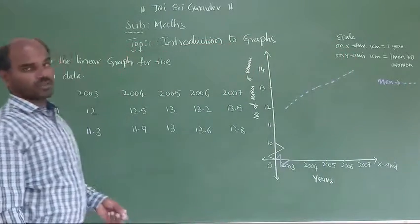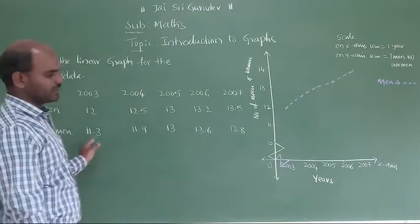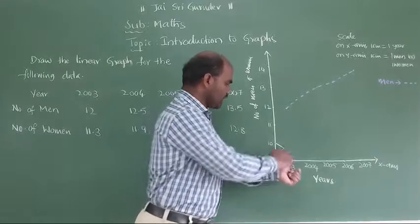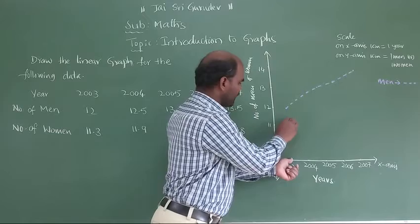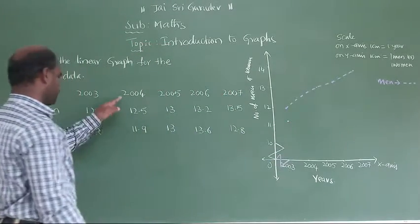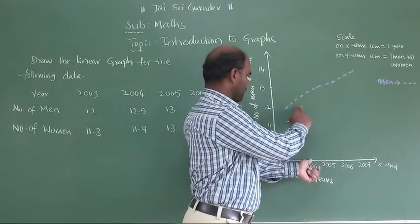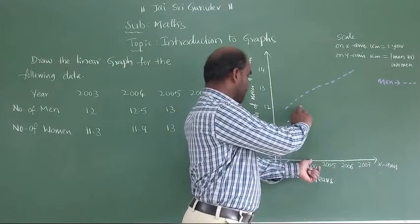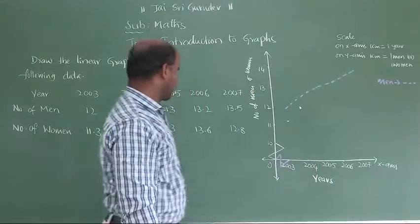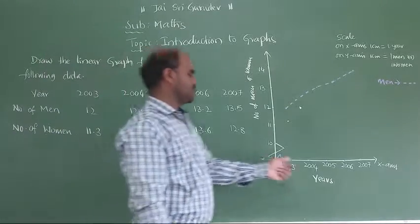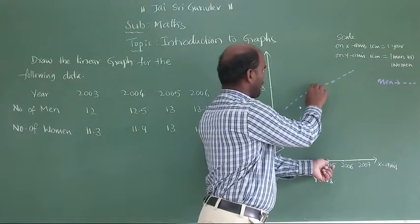Next, women you want to show. Women I'll take a different line. Women: 2003, 11.3. Between 11 and 12, the third line is 11.3. Next 2004, 11.9. 11.9, near to the 12 line. Next, 2005, 13, exactly.